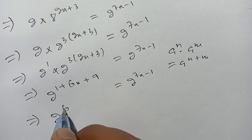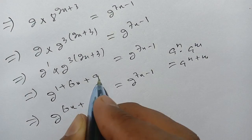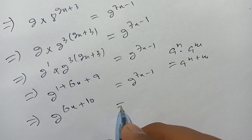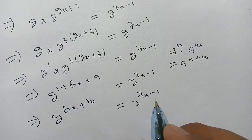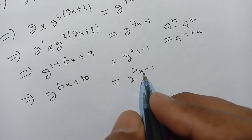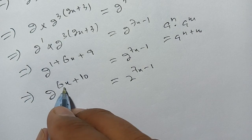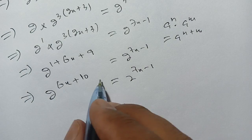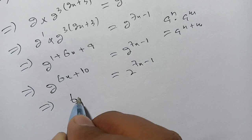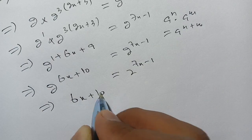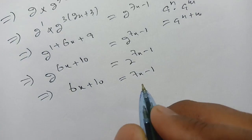We write it as 2^(6x+10) equals 2^(7x-1). Since the bases are the same, the powers can be compared. We write: 6x + 10 = 7x - 1.